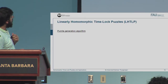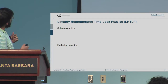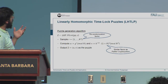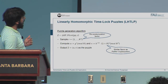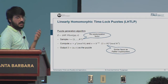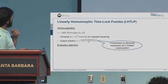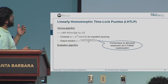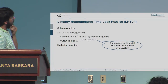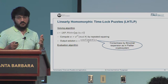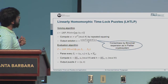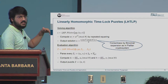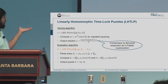The puzzle generation algorithm chooses a random R, which acts as a randomization factor, and outputs the puzzle with components U and V, where component V is reminiscent of the Paillier cryptosystem. The solving algorithm takes the puzzle (U, V), takes the first component U and sequentially squares it to obtain the blinding factor, and eventually obtains the solution S. The correctness of this solving algorithm follows the binomial expansion as in the Paillier cryptosystem. The evaluation algorithm is fairly simple: you take several puzzles and multiply the components of each to obtain the eventual evaluated puzzle.